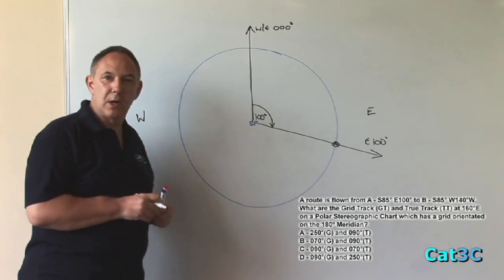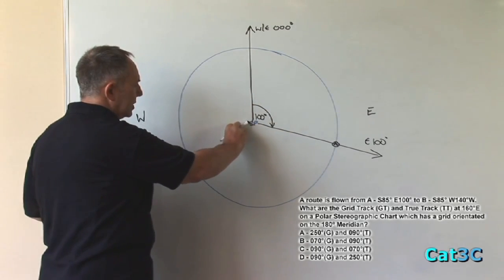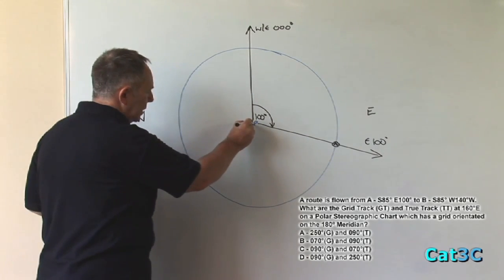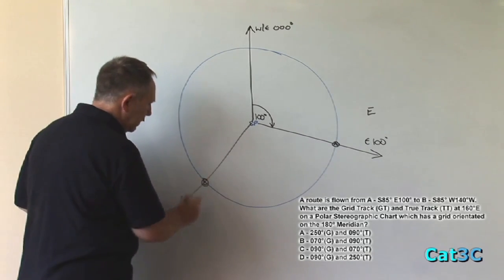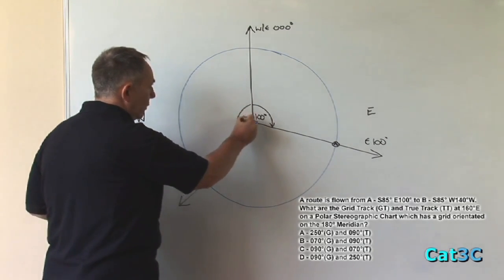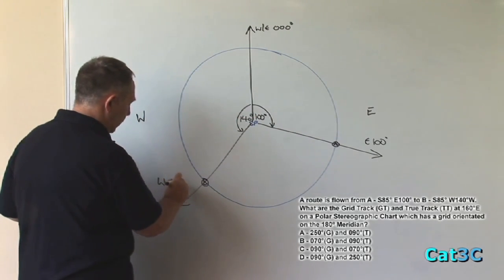B is at west 140 degrees, which is 140 degrees to the west from the Greenwich meridian, which is down here. That's position B. This angle is approximately 140 degrees and position B is at west 140 degrees.